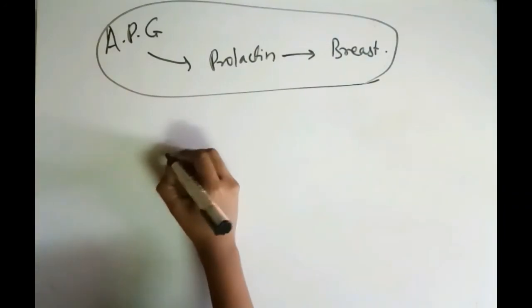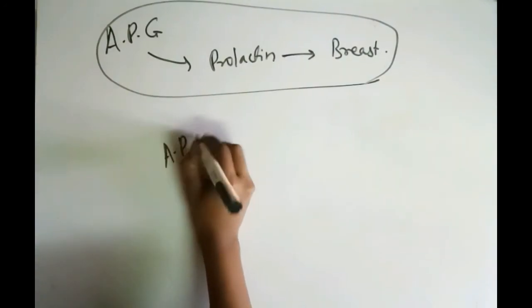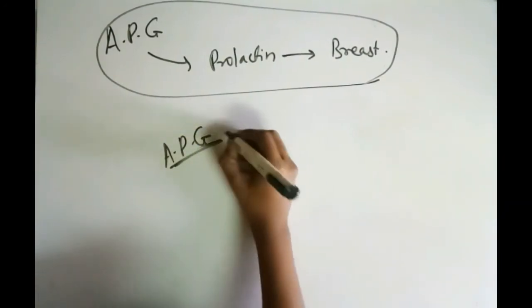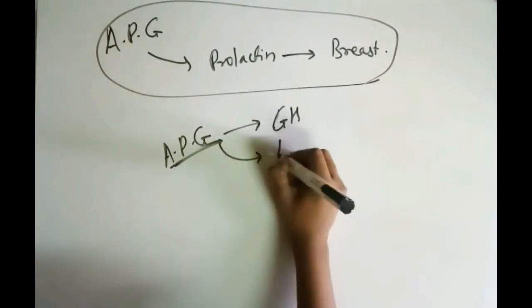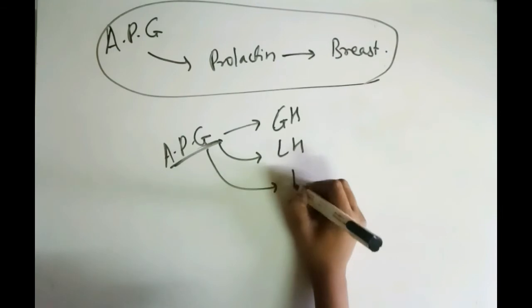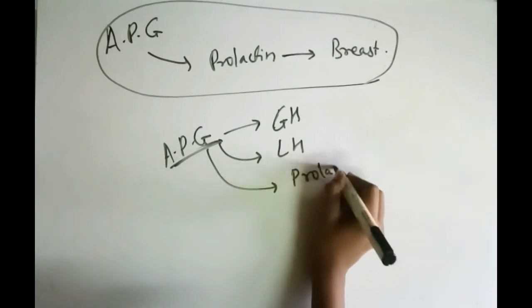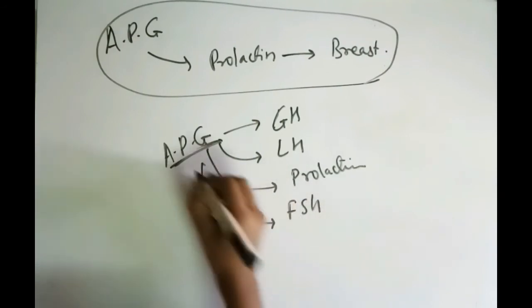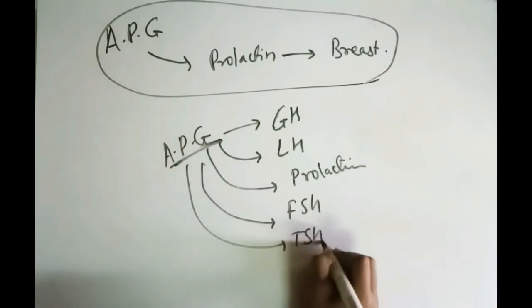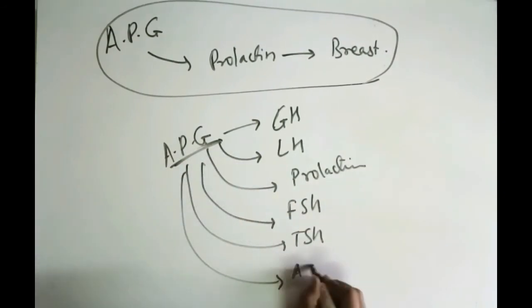So this was all about APG that is anterior pituitary gland which releases growth hormone, luteinizing hormone, prolactin, FSH, TSH, ACTH.